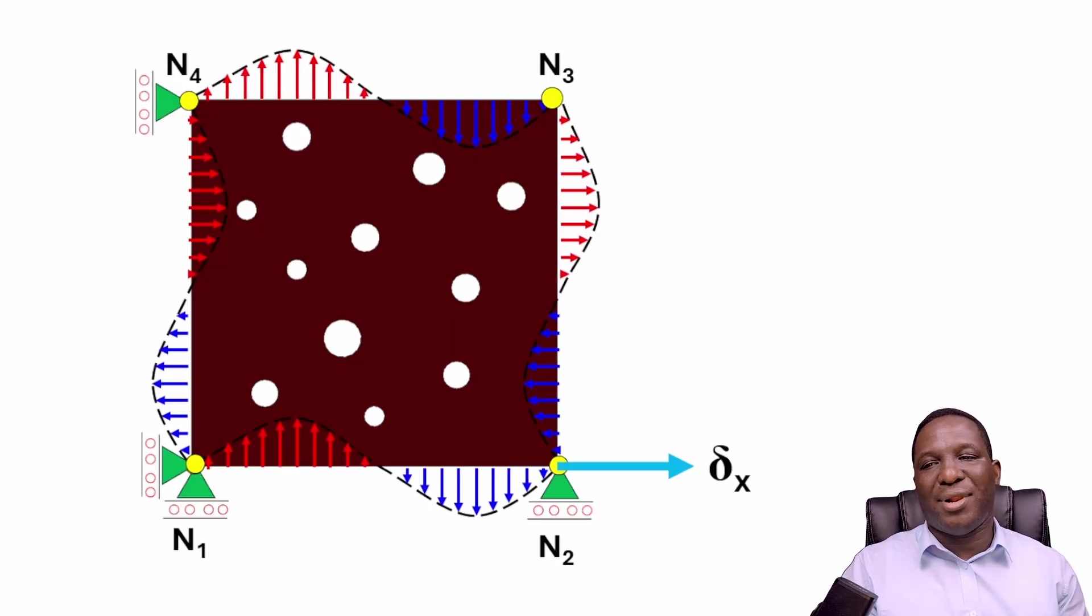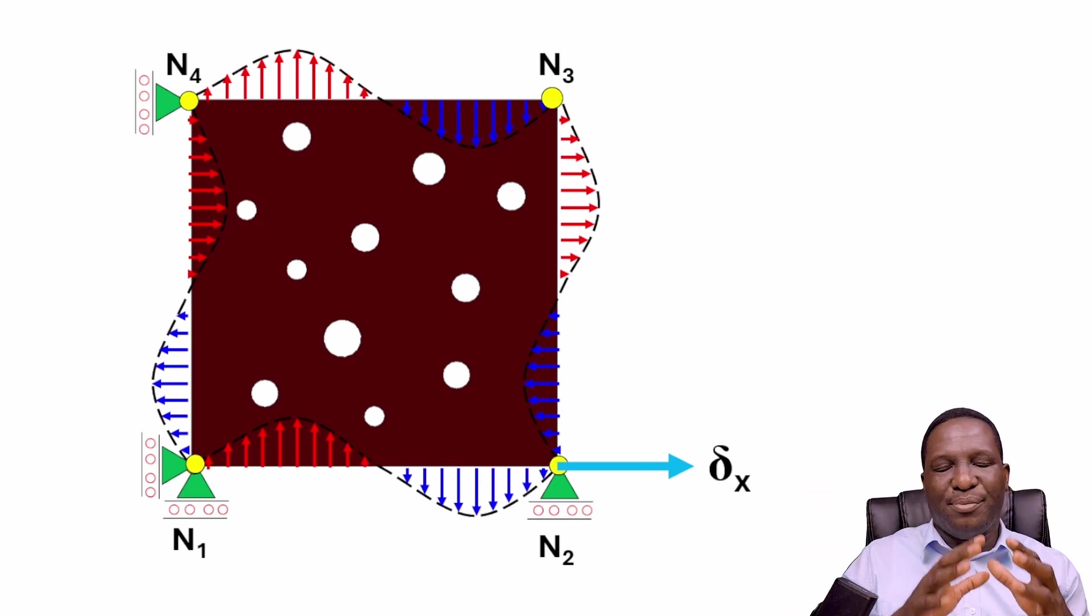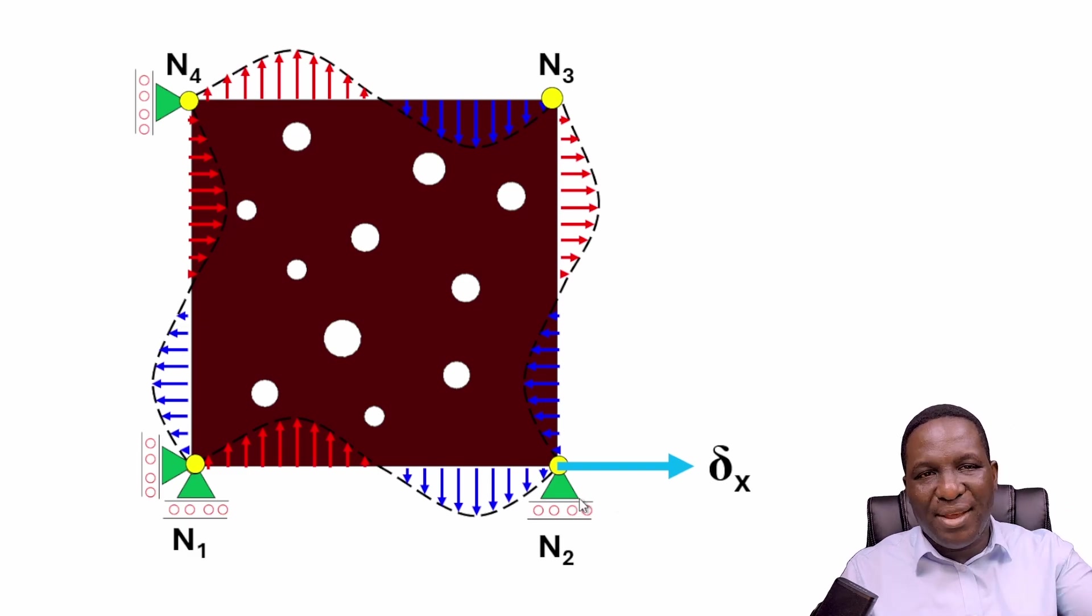I'll also need to apply a displacement to load the model so you get uniaxial tensile deformation along the x-axis. This is the setup: periodic boundary condition imposed with a load that initiates the deformation we want, loading it at point N2.